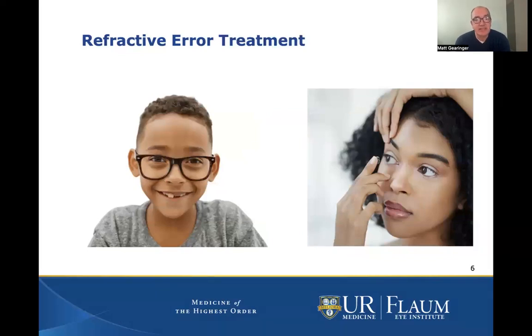Treatment of refractive error is easy, cheap, and common. Younger kids can have glasses to get things in focus for either nearsightedness, farsightedness, or astigmatism. As kids get older, usually in junior high, we talk about doing contact lenses when they are ready and responsible.